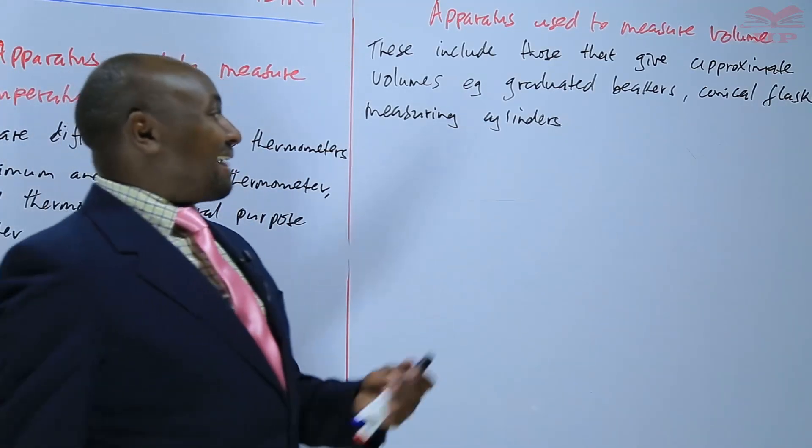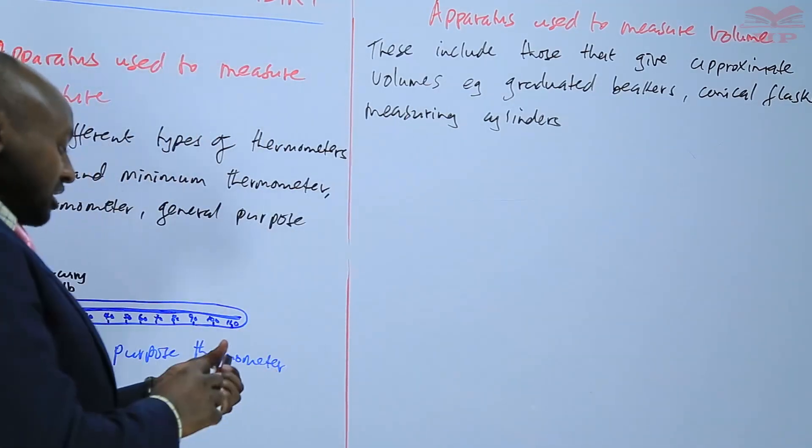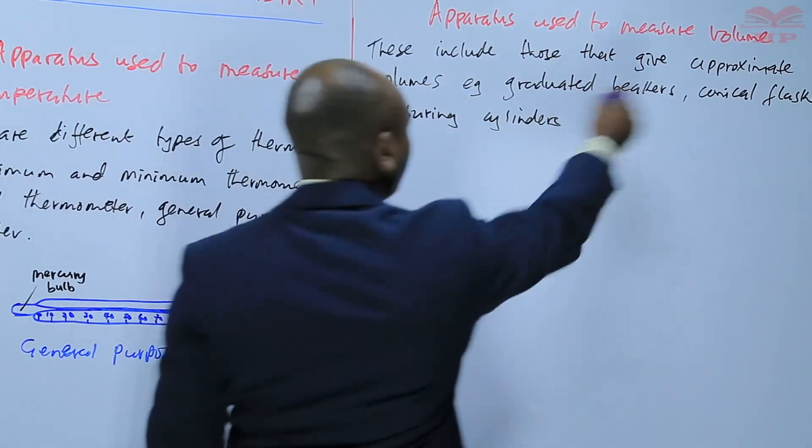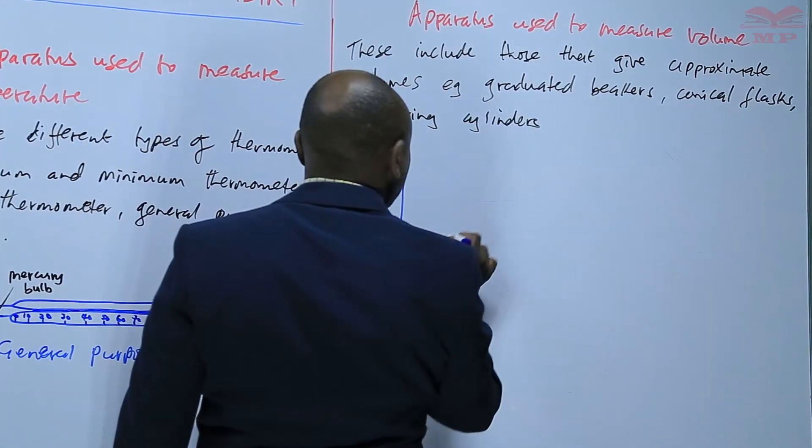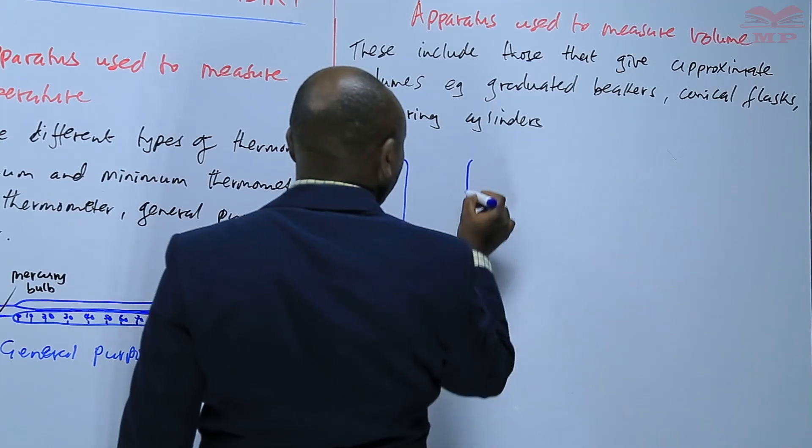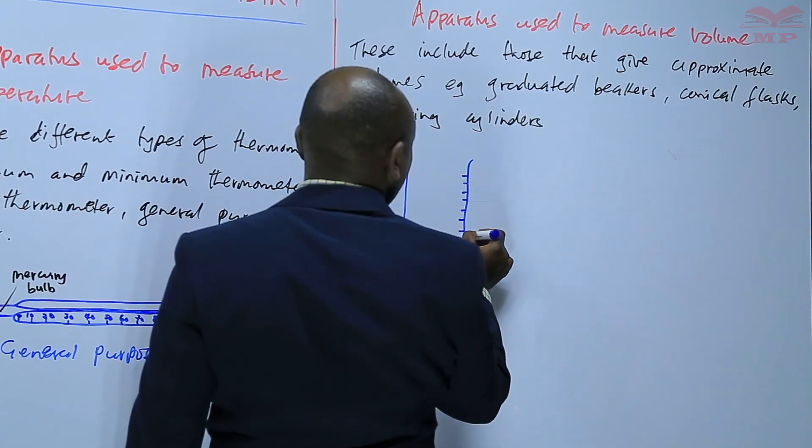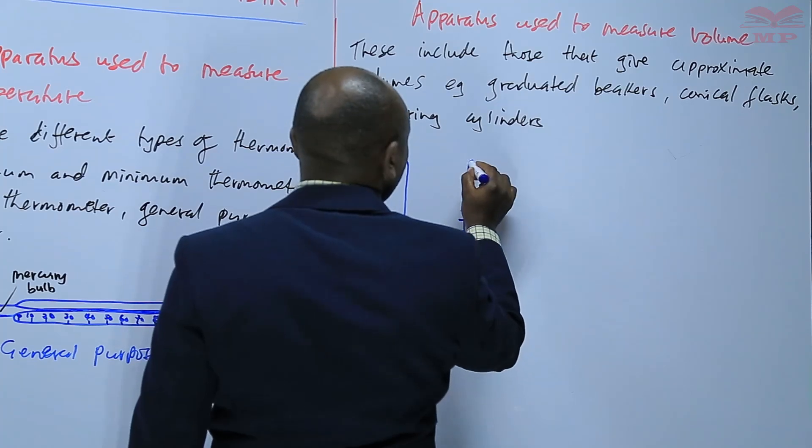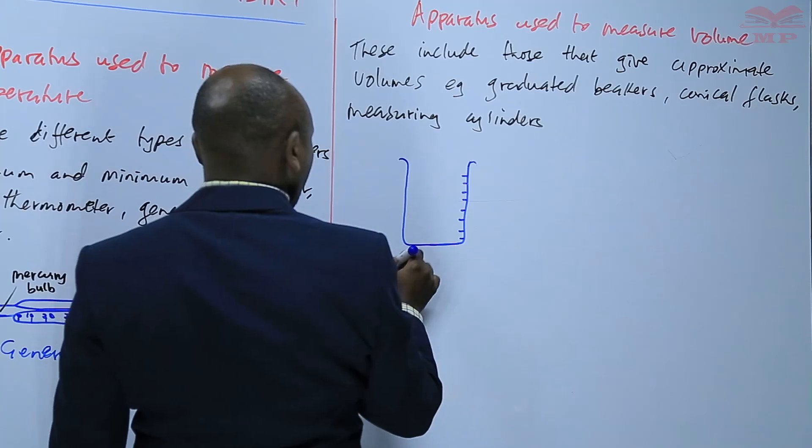But we have others that can measure accurate volumes, others that are more accurate than this. So for this, we have graduated beakers. This is just a normal beaker, but it has calibrations. So this is a graduated beaker.